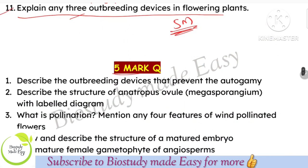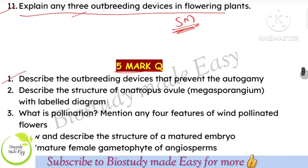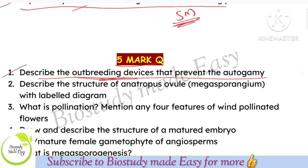Explain any outbreeding devices — this is a 5-mark question. Outbreeding devices prevent autogamy. First, write what outbreeding devices are, then list them — such as production of unisexual flowers — and explain each one.